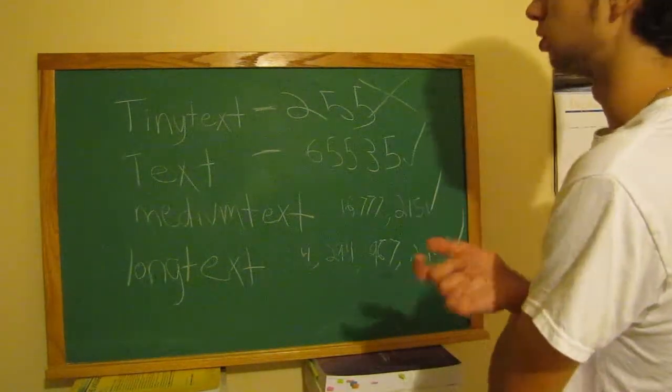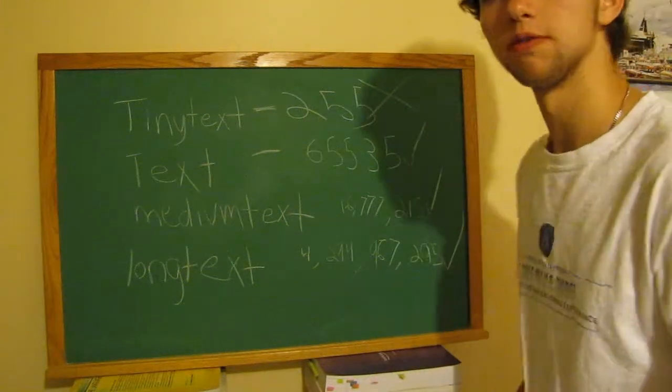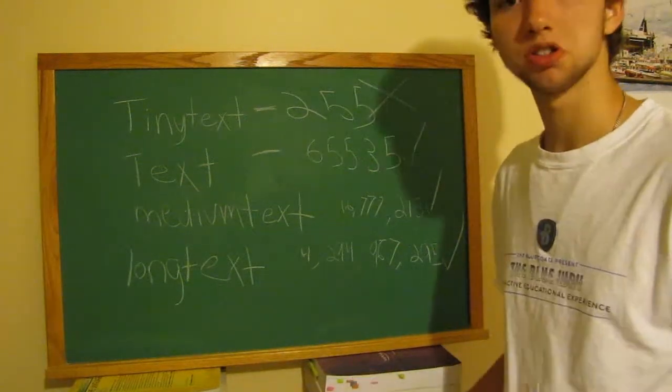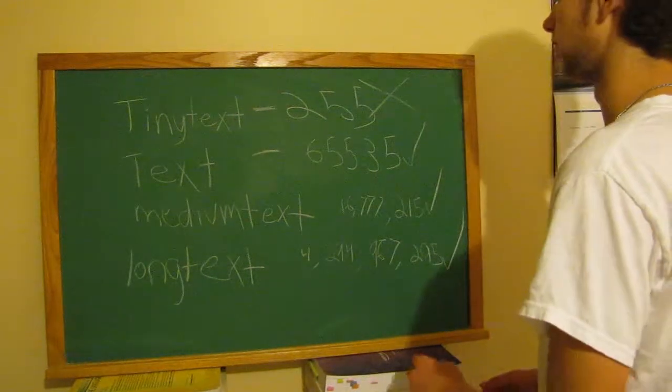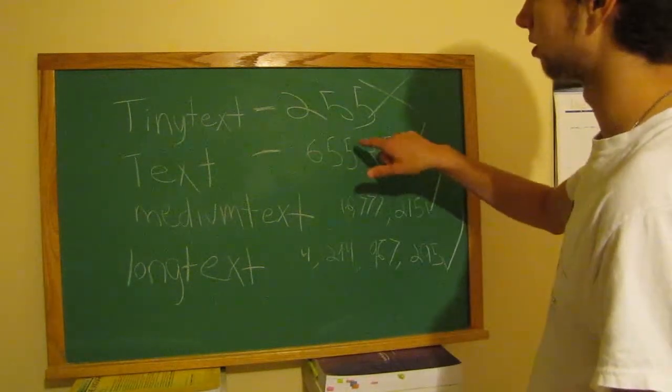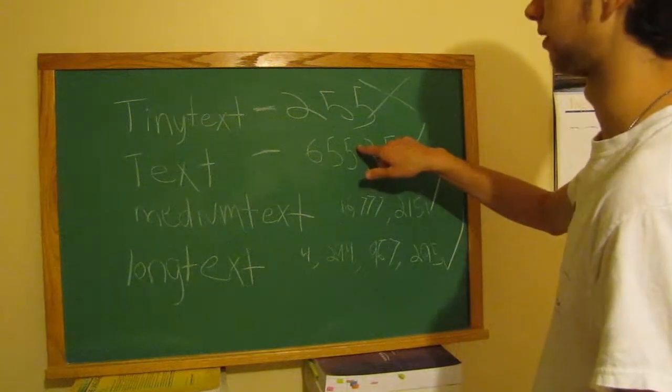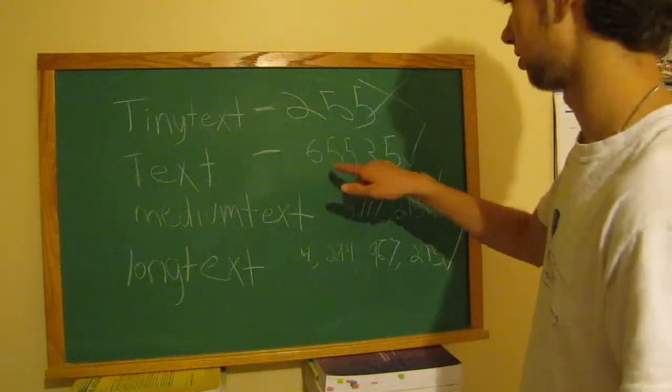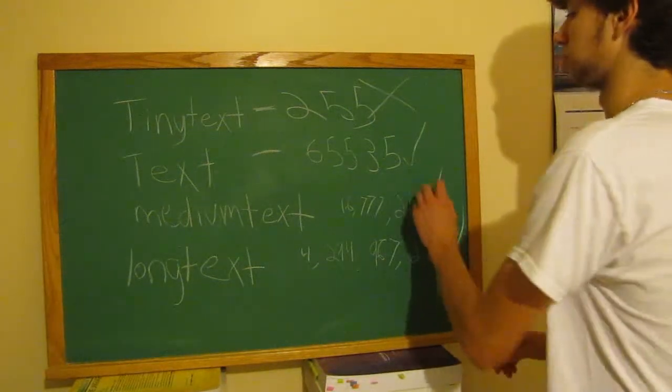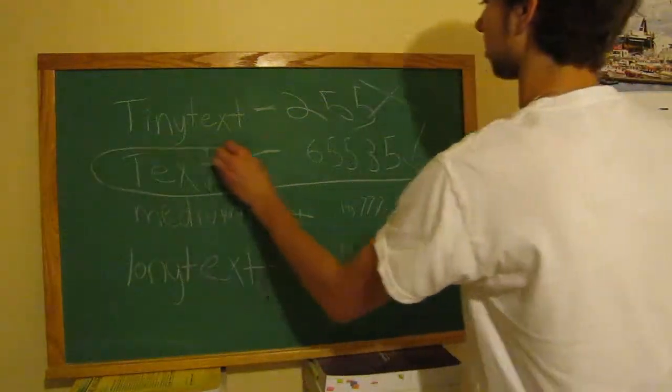So, which one should you use? Well, the rule to follow is use the smallest one that will store what you need. So, as you can see, if it's 40,000, it is under this one of 65,000. And 16,000,000 is far bigger than 16,000,000. So, you will want to use the text box.